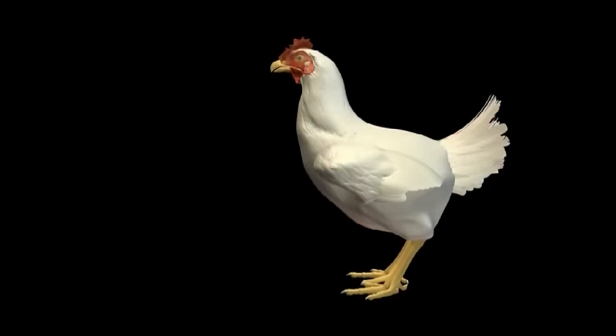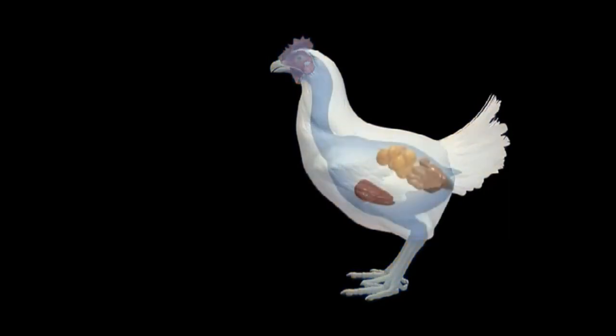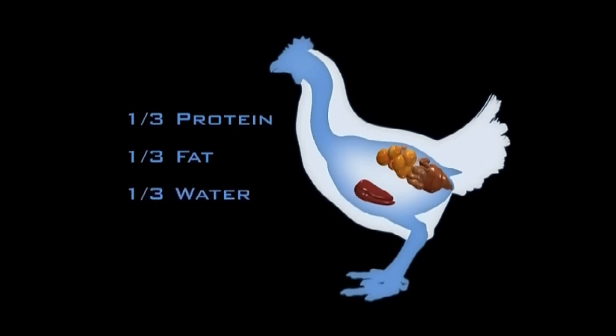When a hen is actively laying, nutrients from the food she eats are converted into the building blocks of egg yolk. These building blocks, one-third protein, one-third fat, and one-third water, are then carried by the bloodstream from the liver to the ovary.